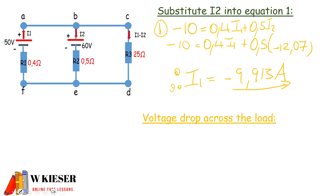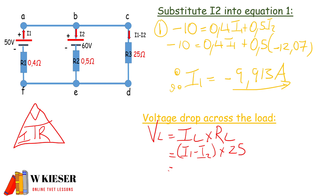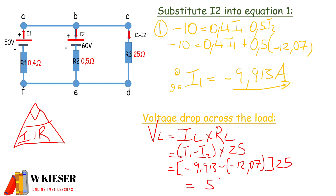Now we can calculate the volt drop across the load using Ohm's law — voltage is current times resistance. The volt drop across the load equals I-load times R-load, where the load current is I1 minus I2. Substituting: minus 9.913 minus (minus 12.07), multiplied by 25 ohms. The volt drop across the load works out to 53.925 volts.